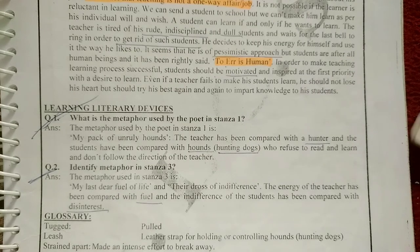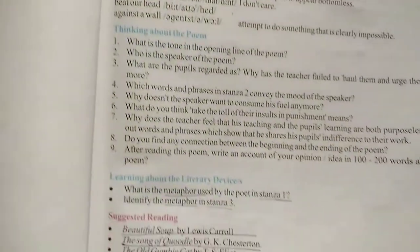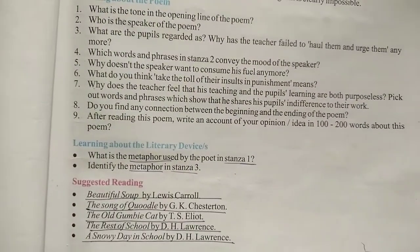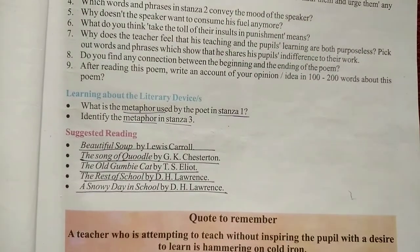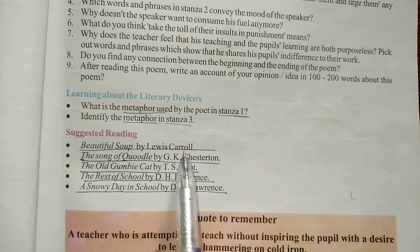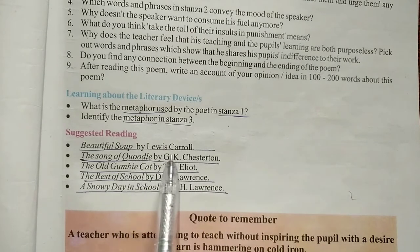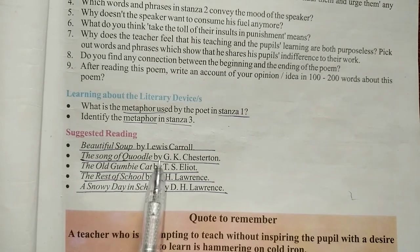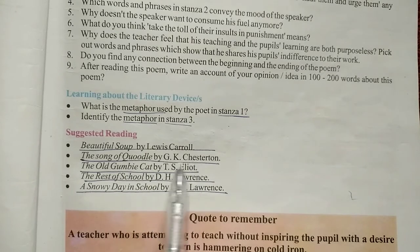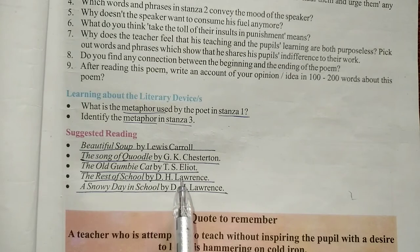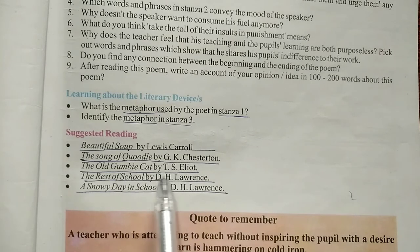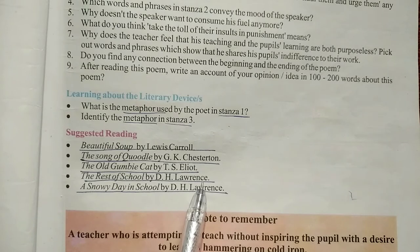After that, there are the suggested readings that the publisher has recommended. These include 'Beautiful Soup' by Lewis Carroll, 'The Song of Quoodle' by G.K. Chesterton, 'The Old Gumbie Cat' by T.S. Eliot — a small poem from T.S. Eliot — and 'The Best of School' by D.H. Lawrence. You need to go through these readings and these poems.